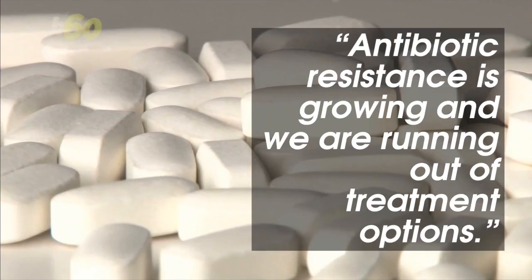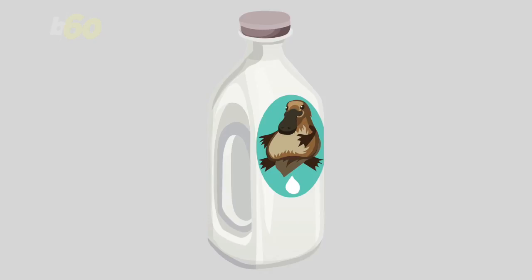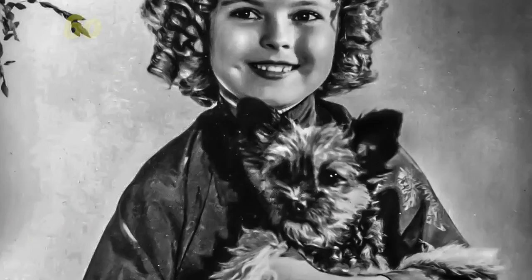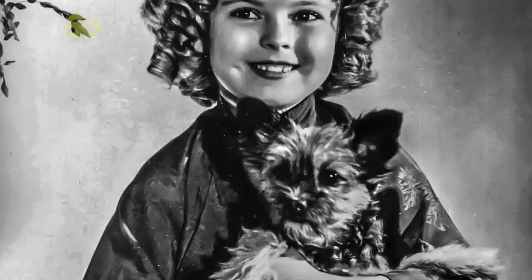But scientists think they may have found the answer in platypus milk. According to BGR, new evidence published in Structural Biology Communications reveals that platypus milk has a particular protein whose curly shape gives it unusual antibiotic abilities.